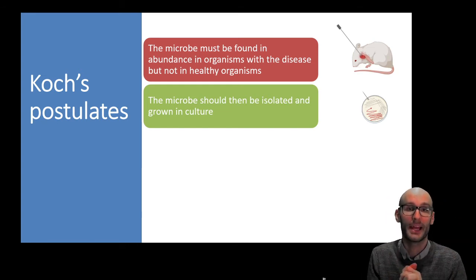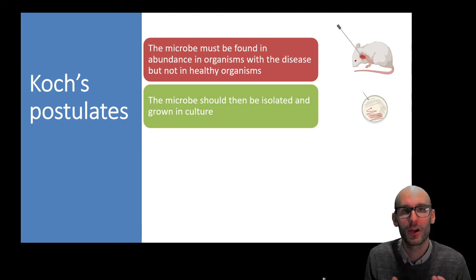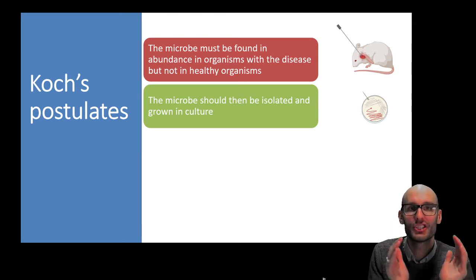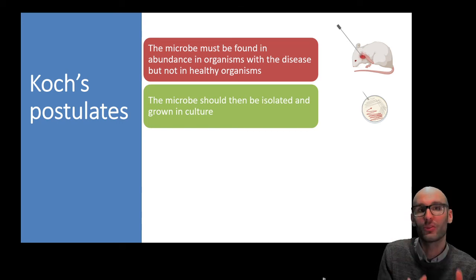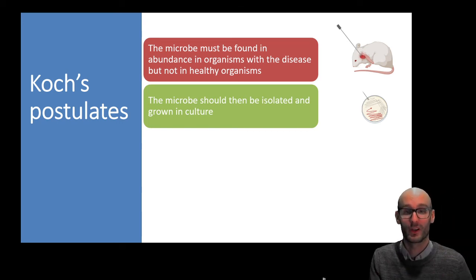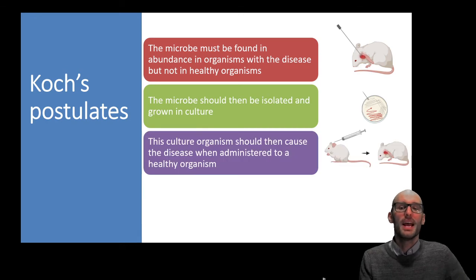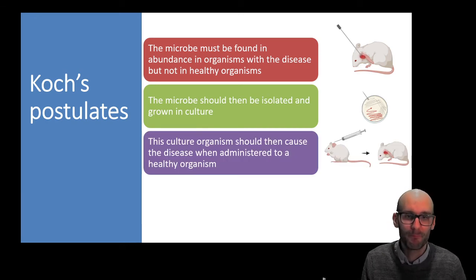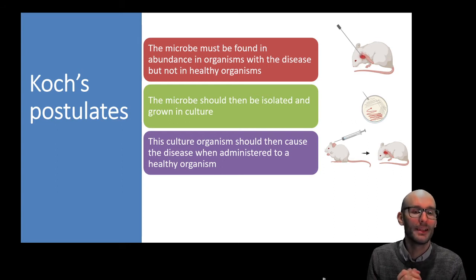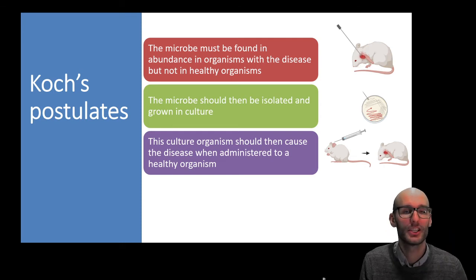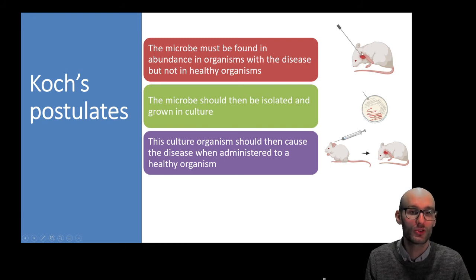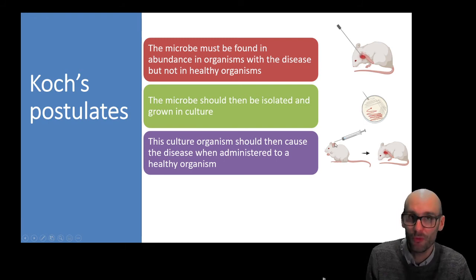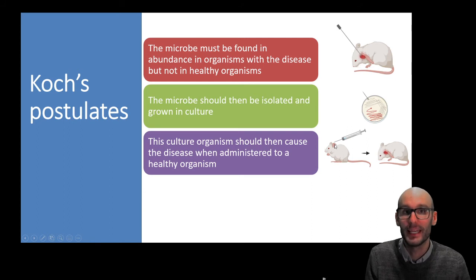Second, the microbe should be isolated and grown in pure culture. Using the transfer technique, you should be able to create a pure culture of one type of bacteria isolated from the wound or organism thought to be the cause of the disease. That culture should then be able to be administered to a healthy organism and cause that disease — so you take the pure culture isolated from a diseased mouse, inject it into a healthy mouse, and show that it causes the disease.